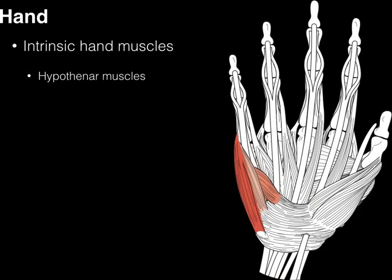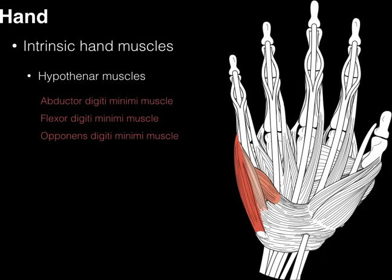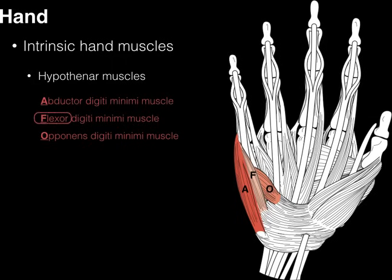The hypothenar muscles are muscles that act on your pinky, and there are three of them: abductor digiti minimi — digiti minimi means small digit — flexor digiti minimi, and opponens digiti minimi. Again, I don't care if you can identify these three individual muscles on a picture or cadaver; it's the actions. One of these muscles will abduct the pinky, one will flex the pinky, and one will oppose — pinky touching the thumb. Fine movement of that small finger.